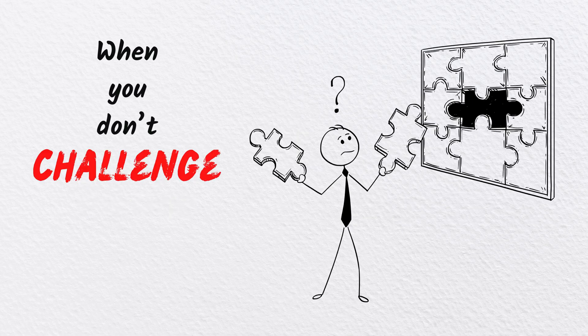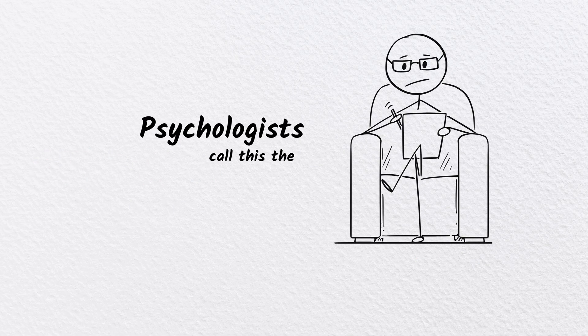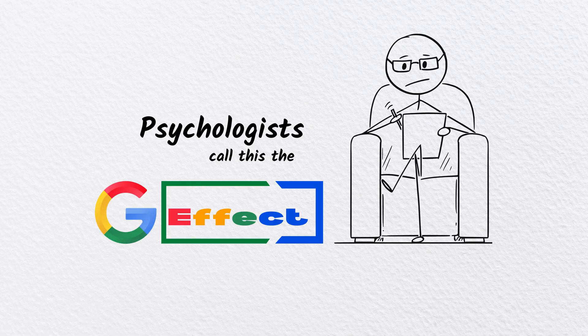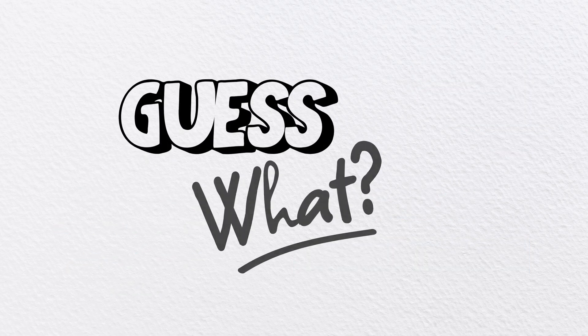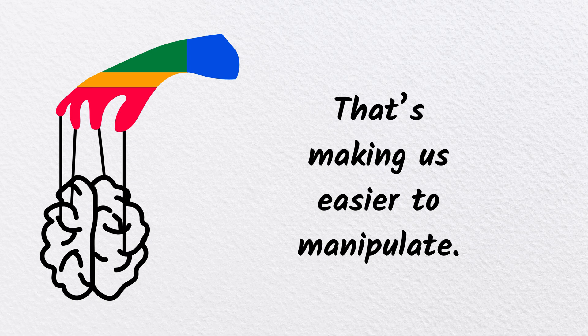Psychologists call this the Google Effect. People don't retain information anymore because they assume they can just look it up later. And guess what? That's making us easier to manipulate.